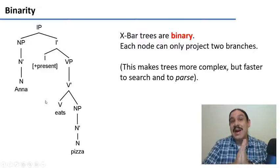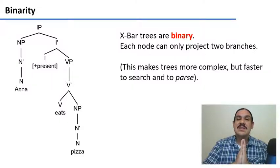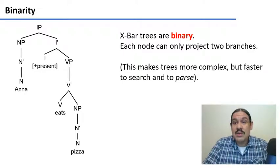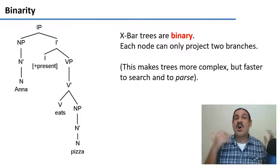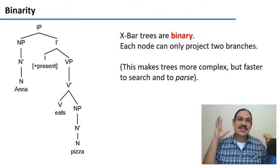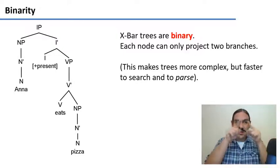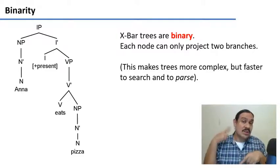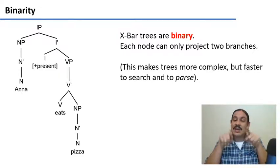X-bar trees are binary at most. Each of the nodes can project two branches at most, and this is a very mathematically desirable condition. It makes them more complex, sure, you need more nodes, but it makes them faster to search and to parse. So when you hear a sentence, your brain has to try to build an X-bar structure or any syntactic structure for the words that you're hearing, and generating it in binary trees makes the operation faster.